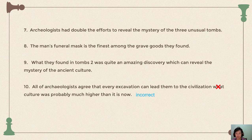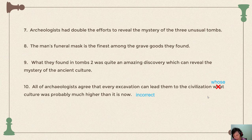Be careful with the meaning of 'what,' 'which,' and 'whose.' In this sentence, 'culture' is possessed by 'the civilization,' making it a possessive relationship. So you must use 'whose.' However, in this context 'whose' is not functioning as an interrogative adjective but rather as a relative pronoun — the conjunction for an adjective clause. This is an important distinction.